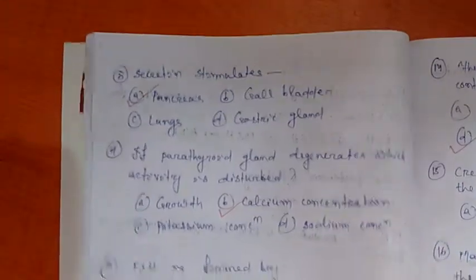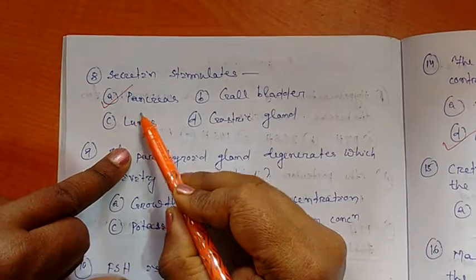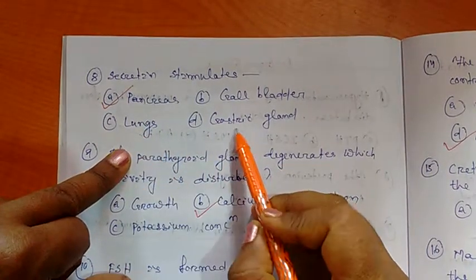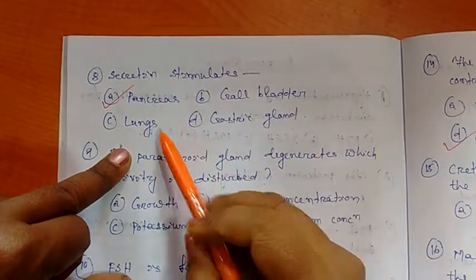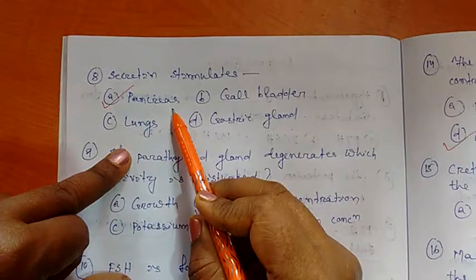Next, question number 8. Secretin stimulants. So correct option is pancreas. Secretin stimulates pancreas.